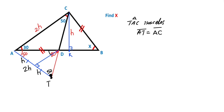And then these angles are 40 degrees. Why? Because this line is a bisector line. Next step: these two parts are equal, so let's call these two equal parts m units.